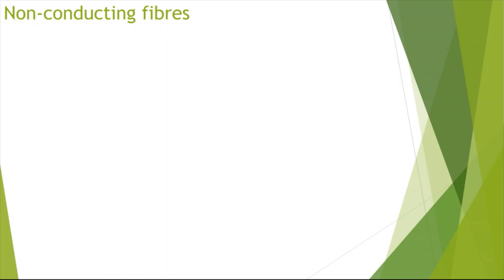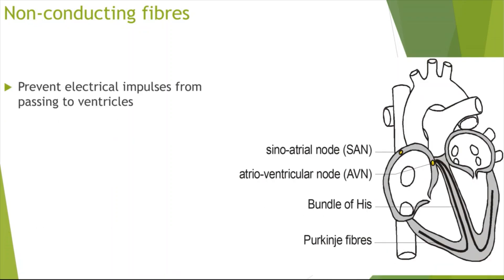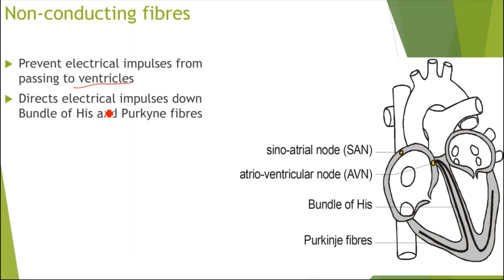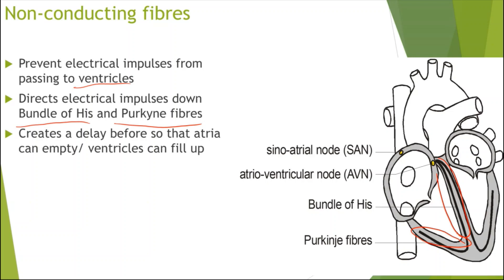So the importance of the non-conducting fibres: they prevent the electrical impulses from passing to the ventricles directly from the atria. This directs the impulses down the bundle of His and Purkinje fibres instead. This is important because it creates a delay — the impulses can't pass straight from atria to ventricles and must travel down the bundle of His and Purkinje fibres.